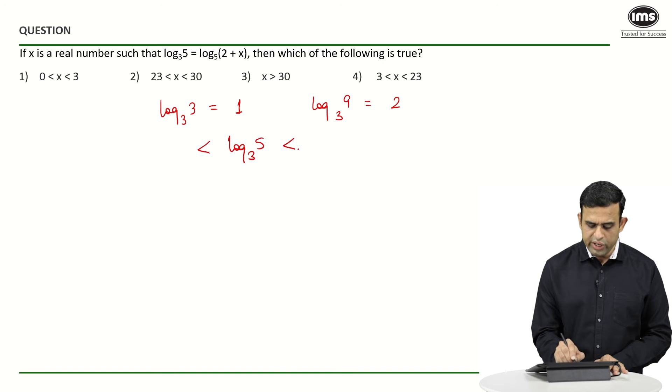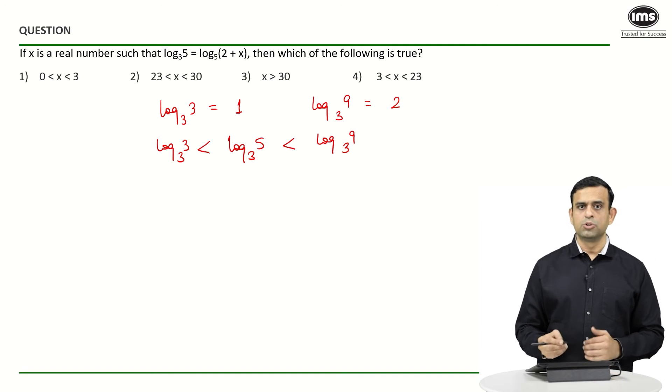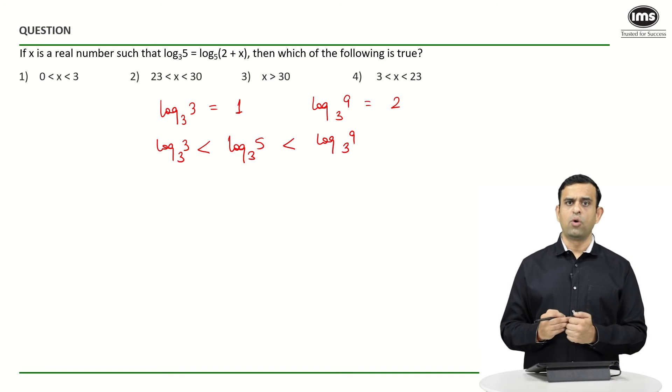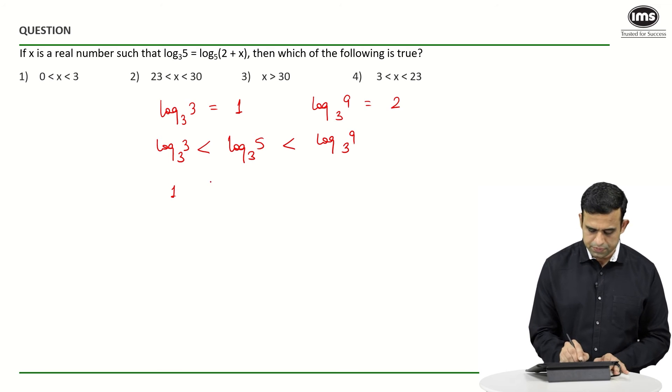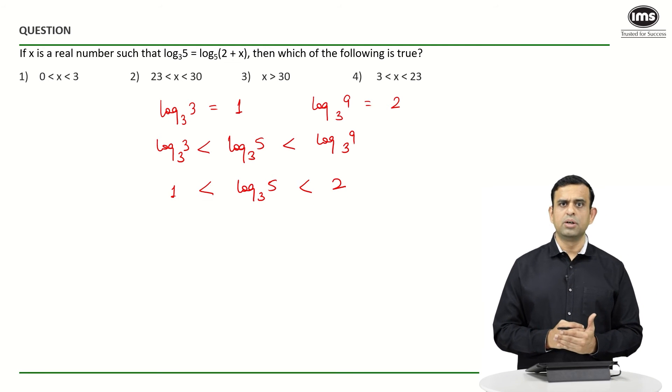More than log 3 base 3 and less than log 9 to the base 3, which would mean that the value of log 5 to the base 3 will be between the numbers 1 and 2 for sure. And then can we replace the term log 5 to the base 3 by the expression which is log (2 + x) base 5?